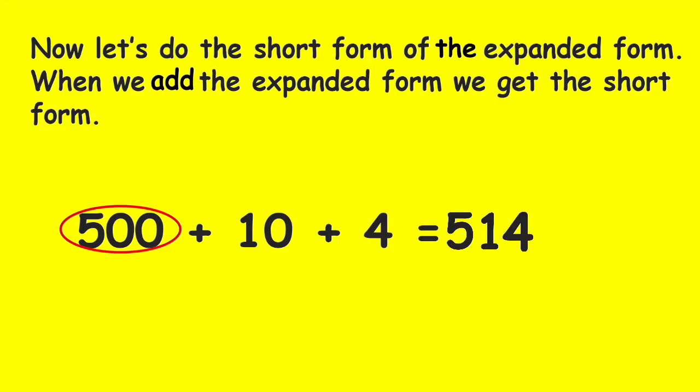So, 500 plus 10 plus 4 is equal to 514. Good job, kids! This is the way to write the short form of the expanded form.